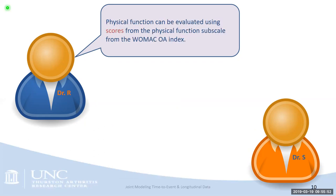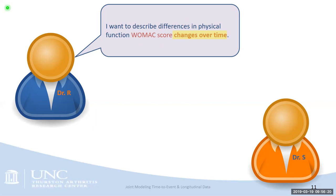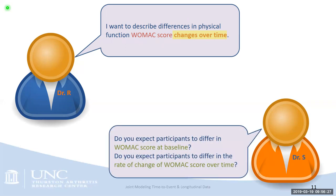Physical function in this context can be evaluated using a score from the physical function subscale of the WOMAC OA index. This WOMAC physical function score can possibly be treated like a continuous variable. Given that information, the interest is in describing differences in this physical function score as it changes over time. The researcher expects participants may differ in that score at baseline and also in their rate of change over time.